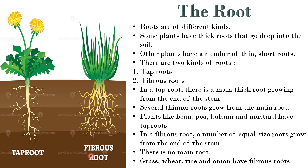In a fibrous root, a number of roots of equal size grow from the end of the stem, as we can see in this image. There is no main root. Grass, wheat, rice and onion have fibrous roots.